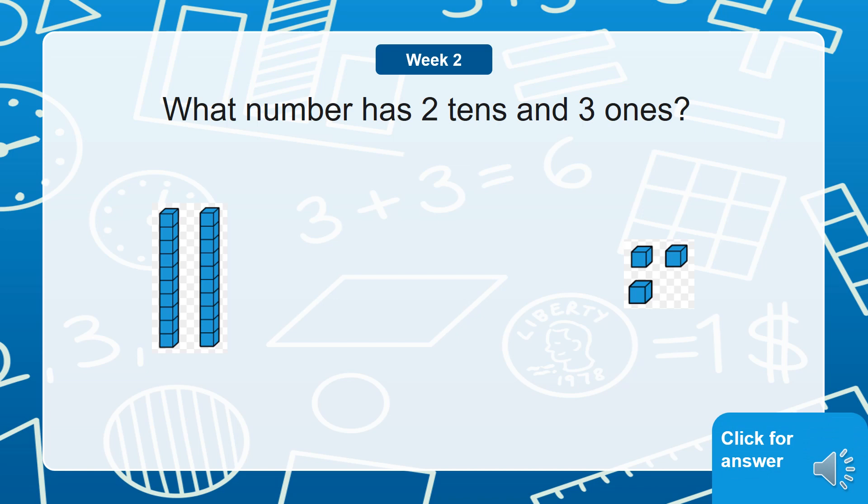What number has two tens and three ones? Remember a ten? Over here we can look and see there's two tens. That means that it's two groups of 10. So you can count them and see how many there are. One, two, three, four, five, six, seven, eight, nine, 10.